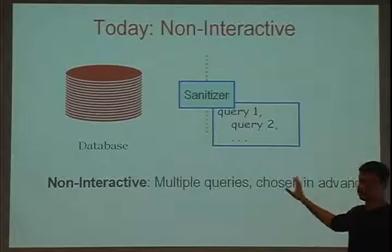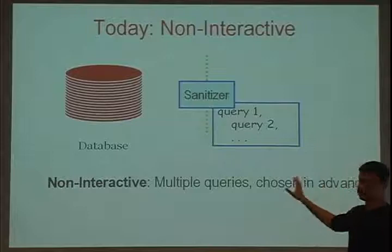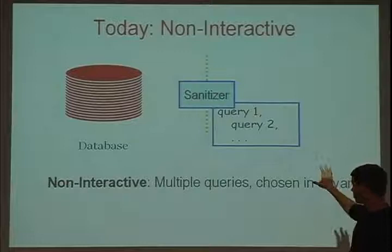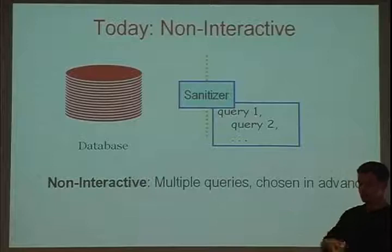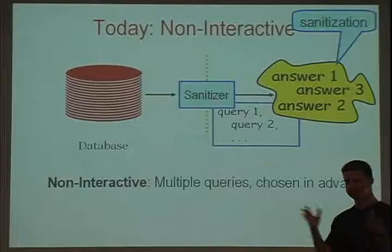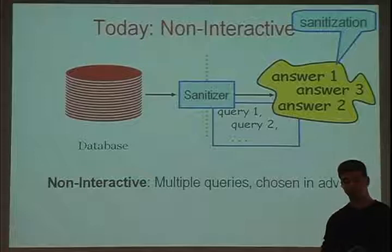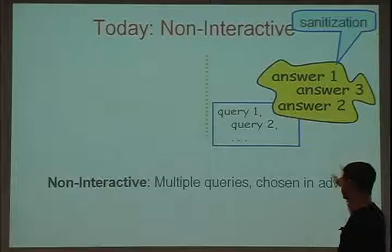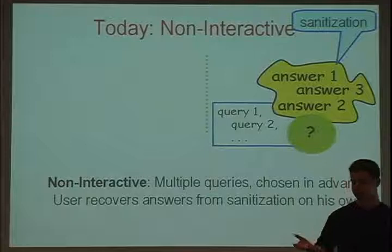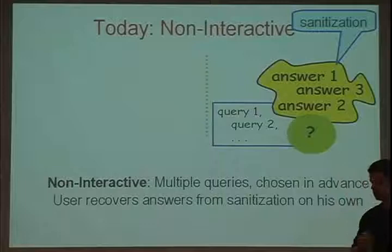The main model I want to consider is the non-interactive model. In this model, the queries are specified non-adaptively and in advance. The sanitizer is given some potentially huge set of queries — implicitly or explicitly specified. Given this set, the sanitizer goes to the database and in one shot computes some privacy-preserving answer blob — a sanitization — that contains the answer to all the queries. Once it's done, the database and sanitizer can go away. All the answers are contained in this privacy-preserving blob.